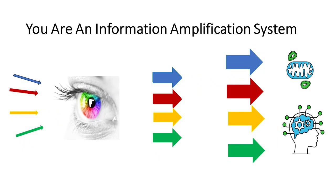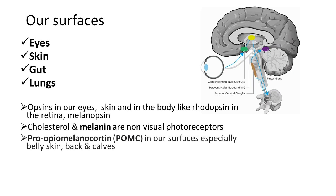Basically we are a photomultiplying system where a small amount of photons can come in and be translated into a large signal received by many components of the body. The eyes and the skin are the main surfaces that receive this information, however the gut and the lungs are very important as well. We have opsins such as rhodopsin in the retina and melanopsin which receives blue light, and we also have non-visual photoreceptors like cholesterol and melanin that can process light.